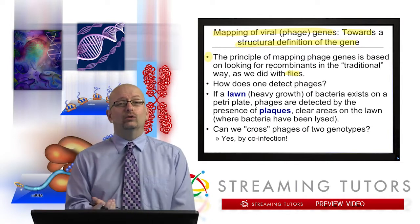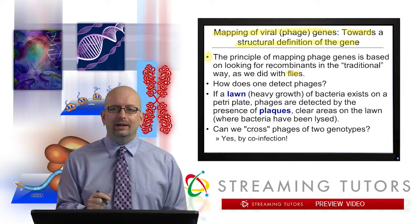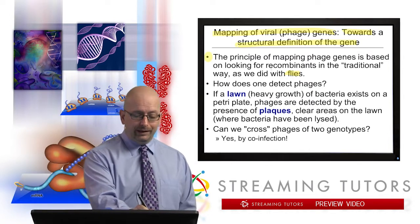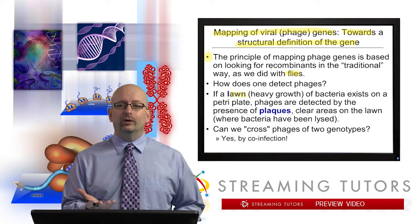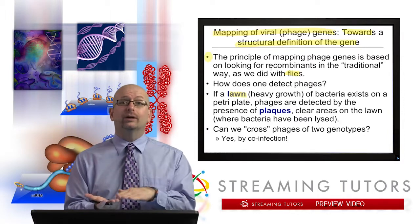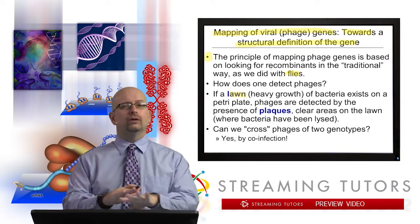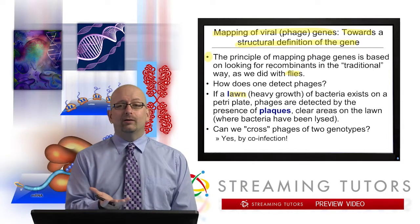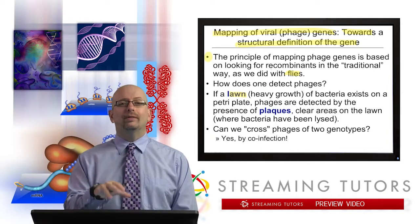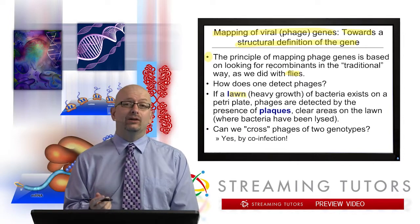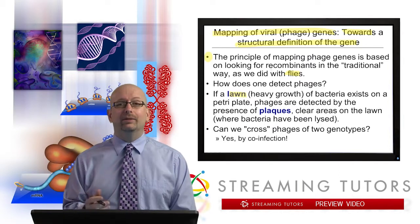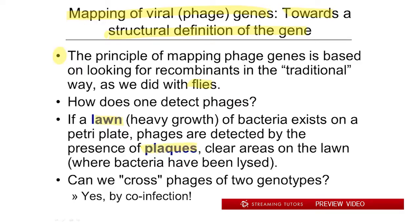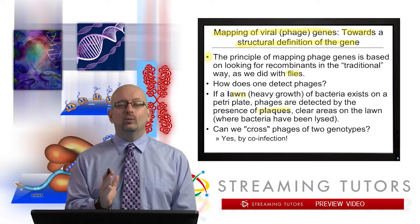How could one even know phages are there? You can only see them with an electron microscope — we're not going to use that. What we basically do to 'grow' phages is use a so-called lawn. A lawn of bacteria just means heavy growth, sometimes called confluent growth. So you have this lawn of bacteria, and when phages are growing there, what they're really doing is destroying the bacteria. Bacteriophage means bacteria eater. You get these so-called plaques — a clear area on the lawn where the bacteria have been killed. You can literally see a hole in the lawn. That's the way we can detect them.